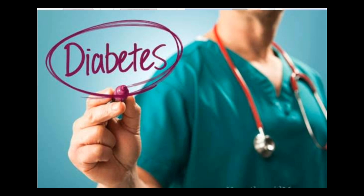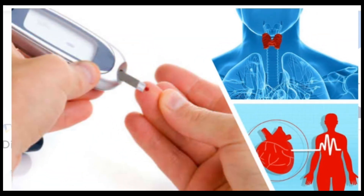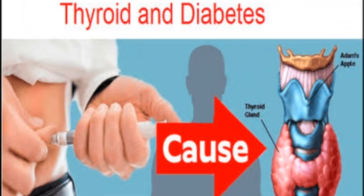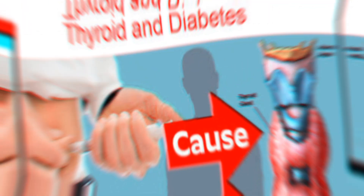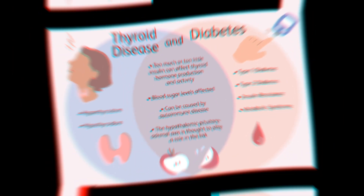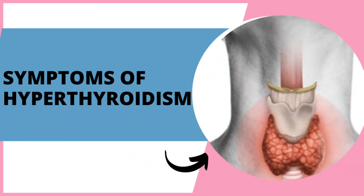Diabetes also increases your risk of thyroid disease. Type 1 diabetes is an autoimmune disorder, and having one autoimmune disorder makes you more likely to develop another. For people with type 2 diabetes, the risk is lower but still present — they are more likely to develop thyroid disease later in life.